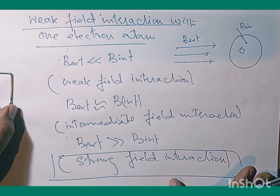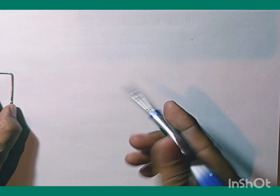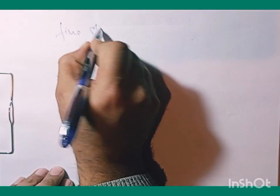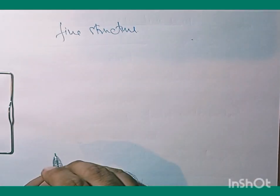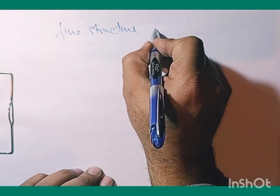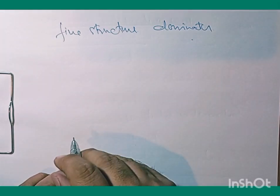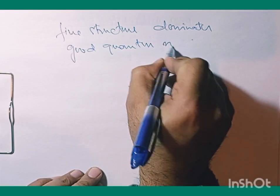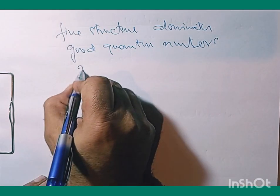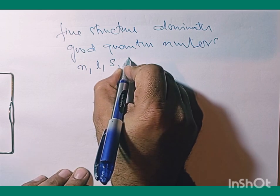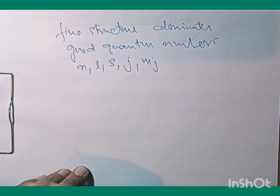In the weak field interaction, the fine structure — which involves spin-orbit interaction as a correction to the original Hamiltonian — dominates. The good quantum numbers here are: principal quantum number n, orbital quantum number L, spin quantum number S, total angular momentum quantum number J, and total magnetic quantum number M_J.